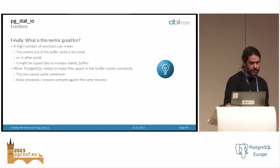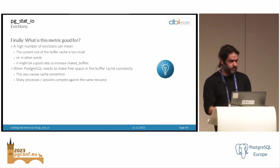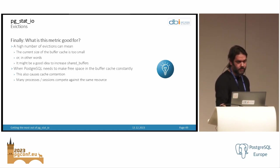What is this metric good for? When you see a high number of evictions, this could mean that your shared_buffers is too small — kicking blocks out of the cache all the time probably means you should increase shared_buffers. When you reset the statistics and the eviction count goes up quite high and quite fast, then you need to increase the cache. You also need experience with your application to really trust this metric.